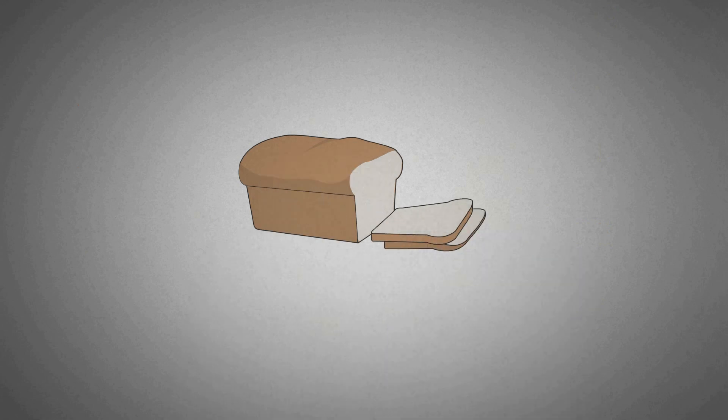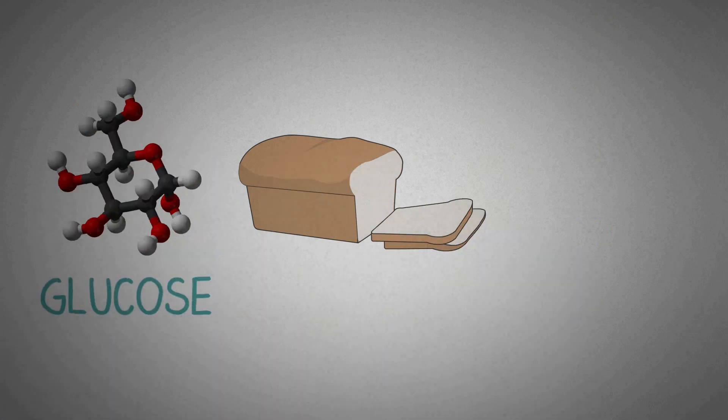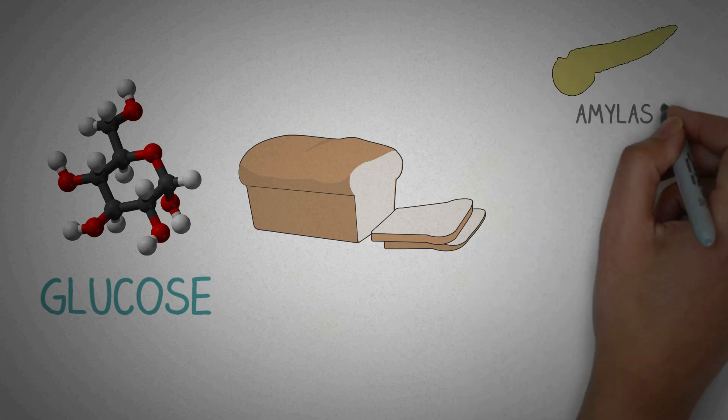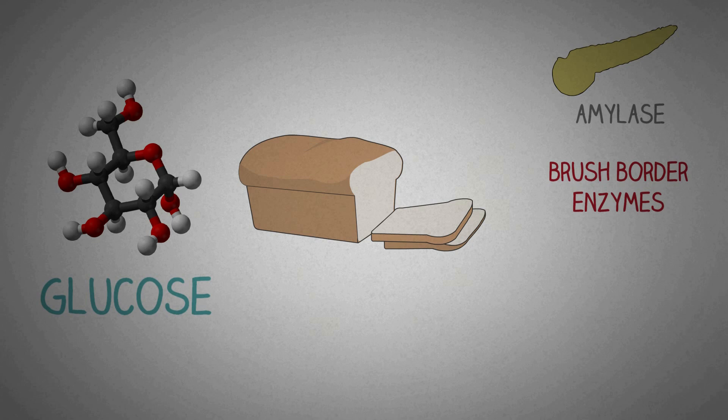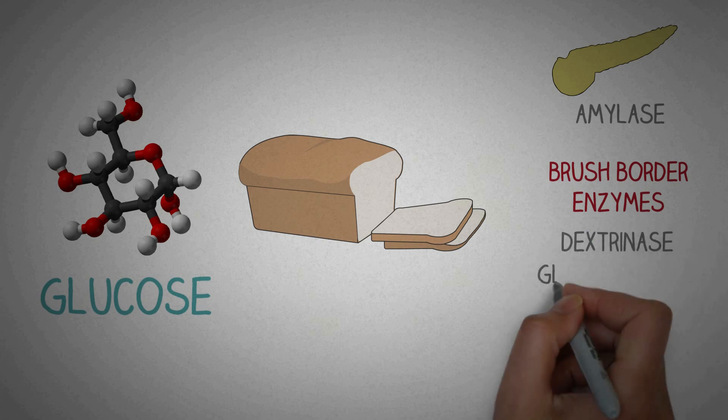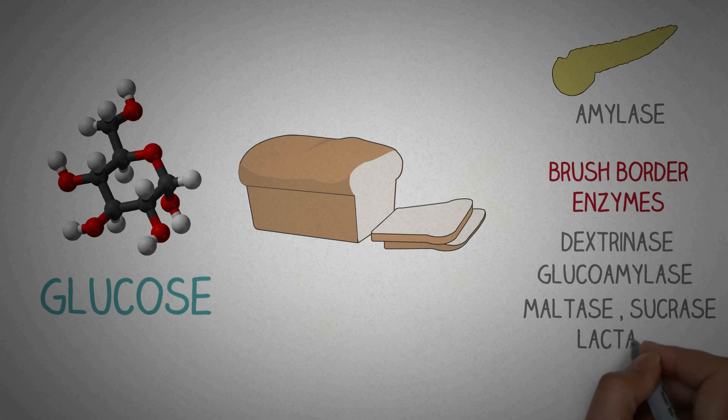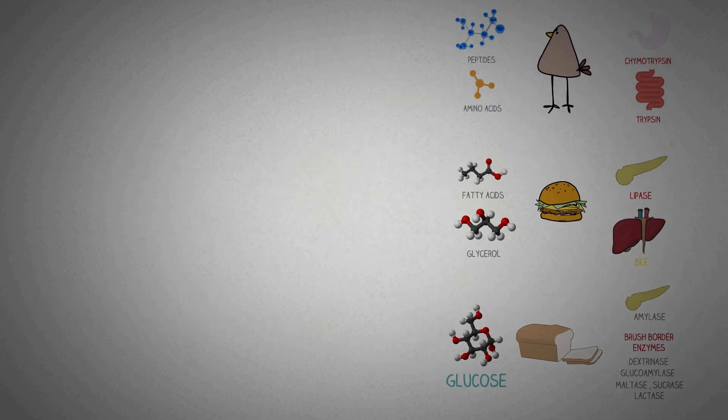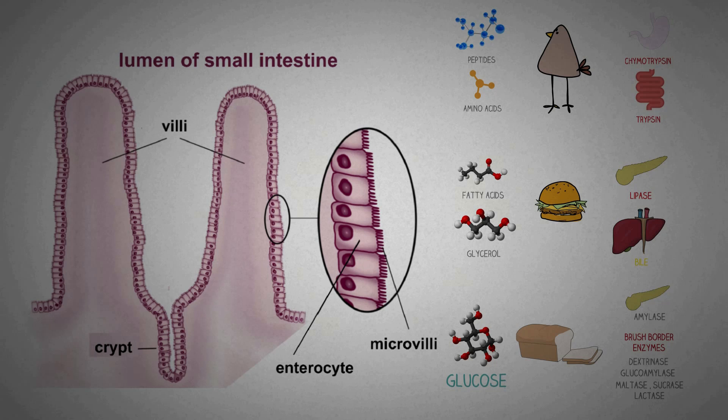The main enzymes that digest carbohydrates are amylase from the pancreas which convert complex carbohydrates into simple ones and also enzymes from the small intestinal wall which are known as brush border enzymes. These enzymes include dextrinase, glucoamylase, maltase, sucrase and lactase. So all of these complex food is broken down into simple molecules which are easy to absorb.